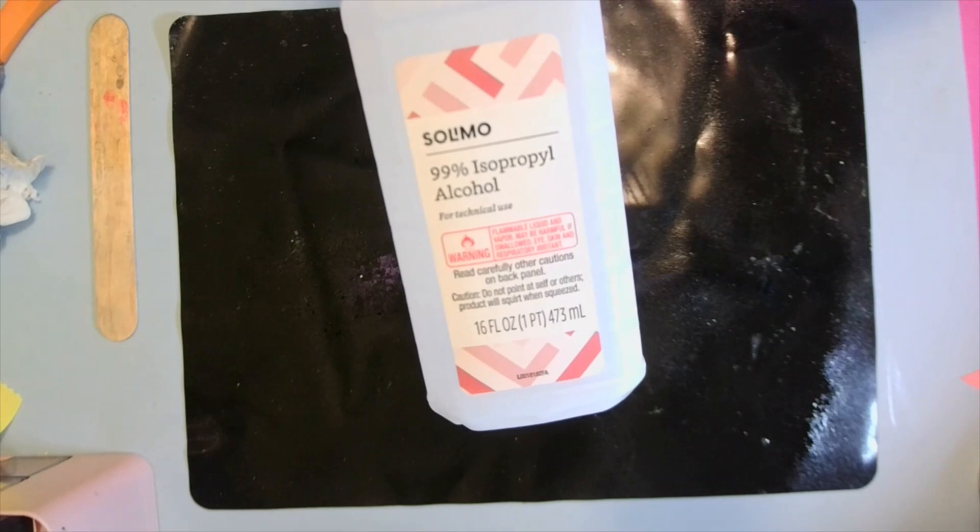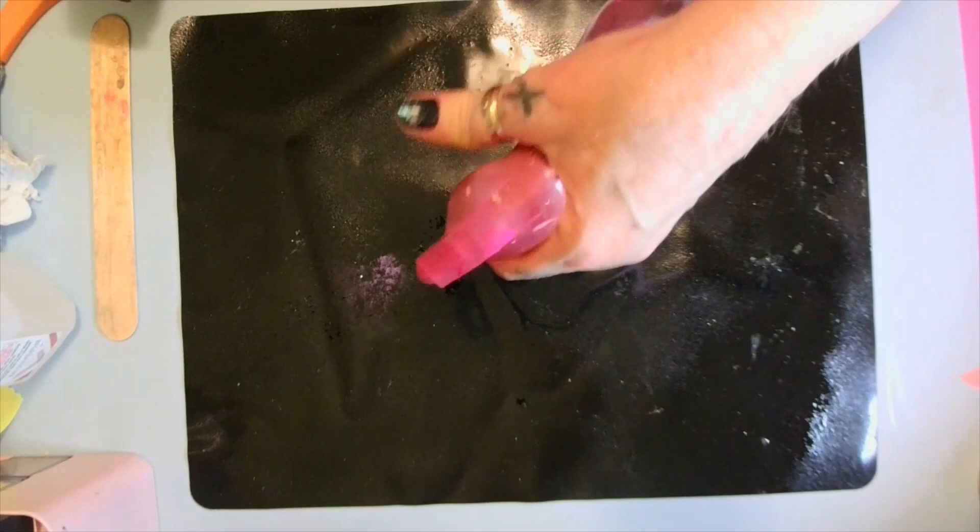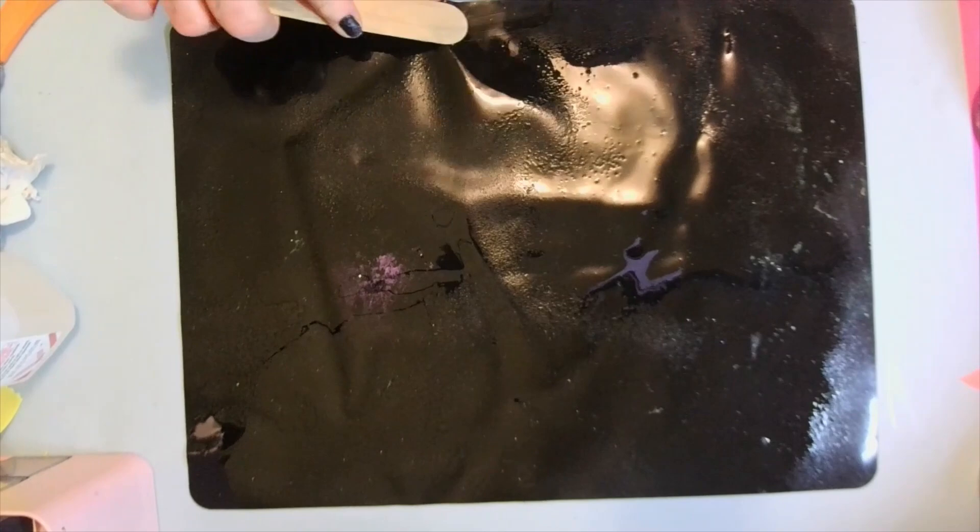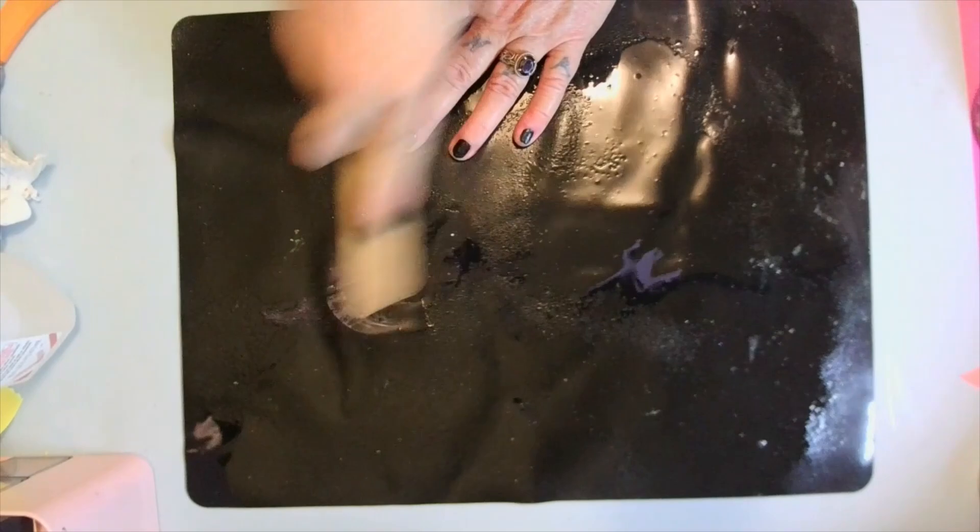I'm going to spray your mat. I'm using isopropyl alcohol 99% - I'm sure any alcohol will work. Now what you want to do is take your stick. I usually go by sections and just start scraping.